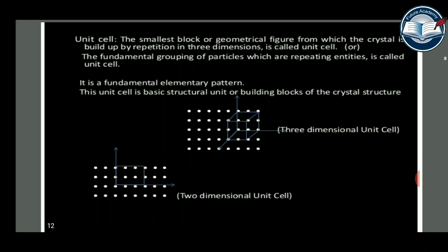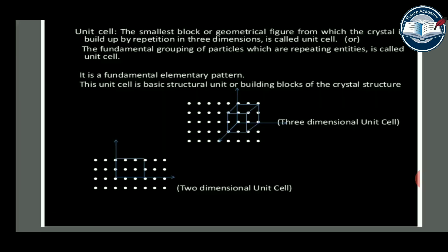The unit cell is the smallest block or geometrical figure from which the crystal is built up by repetition in three dimensions. It is also described as the fundamental grouping of particles which are repeating units. The unit cell is the basic structural unit or building block of the crystal structure, and it can be two-dimensional or three-dimensional.